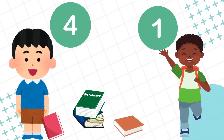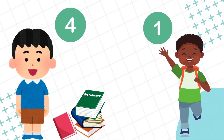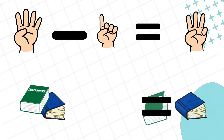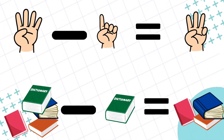Let's take another example. Abby has four books. Abby gives one book to Ray. Then how many books does Abby have now? Count it with your fingers, children. You are correct — four minus one equals three.